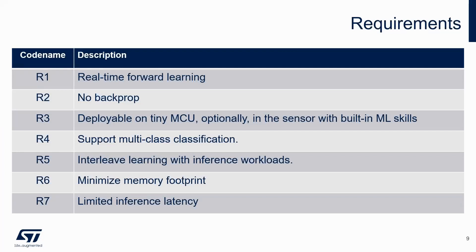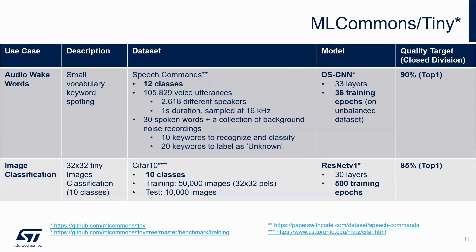The requirements are: we want to support forward learning in real time without backpropagation, deployable on microcontrollers and sensors. Microcontrollers and especially sensors feature very low amounts of memory — just a few kilobytes. These are the constraints — a huge constraint. So for multi-classification, we need to interleave inference and learning, minimize the memory footprint, and decrease the computational complexity and inference latency.